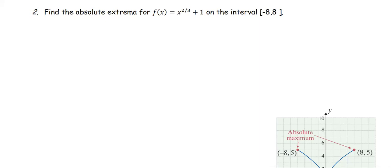In this example, we are going to find the absolute extrema for the function f(x) = x^(2/3) + 1 on the interval [-8, 8]. The endpoint A is negative eight, the endpoint B is positive eight.